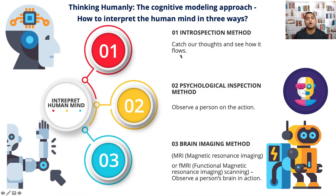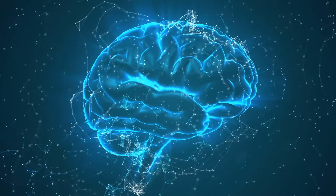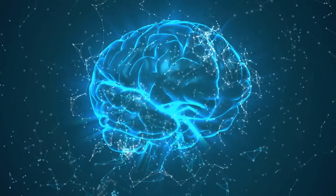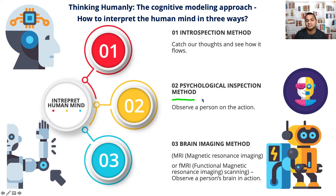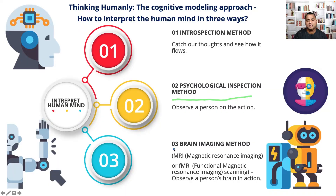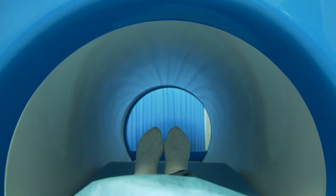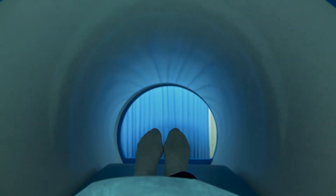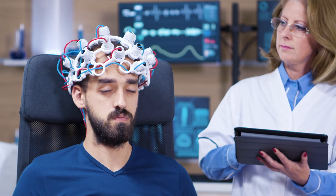In thinking humanly, the cognitive modeling approach, there are three ways to interpret the human mind. One: the introspection method — we can catch our thoughts and see how they flow. Two: the psychological inspection method — we can observe a person in action. Three: the brain imaging method — MRI (magnetic resonance imaging) or fMRI (functional magnetic resonance imaging) scanning — we can observe a person's brain in action.